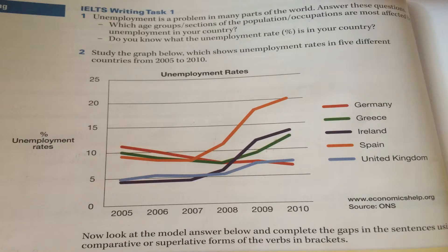In most of the countries shown in the graph, unemployment rates were higher in 2010 than in 2005. However, in Germany, the rate was the lowest at the end of the period.